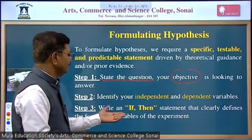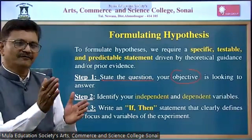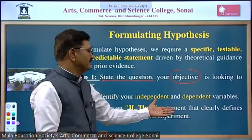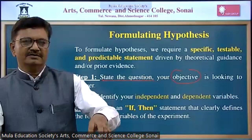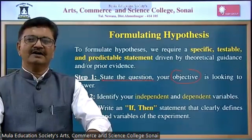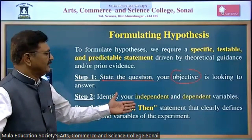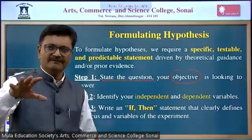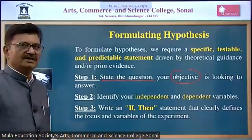The third step is to write if-and-then statements — for example, 'If I add A to B, what will happen?' or 'If I take B first and then A, what will happen?' These if-and-then statements clearly define the focus and variables of the experiment. Always find the independent and dependent variables, then write the if-and-then statement. With the help of this, you can formulate your hypothesis based on your objectives. This is the most important aspect of your thesis or research proposal.